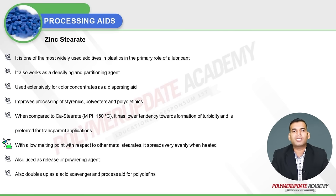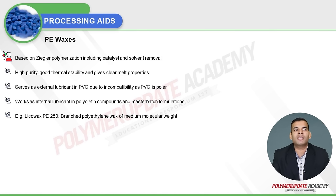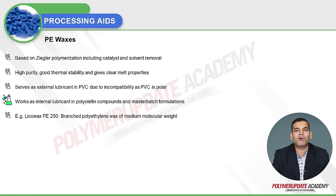With a low melting point relative to other metal stearates, calcium stearate spreads very evenly when heated. It is used as a release or powdering agent, and also doubles up as an acid scavenger and process aid for polyolefins. Polypropylene waxes are low molecular weight polyolefins based on metallocene catalysts, perfectly suitable as sole carriers for pigments and additive masterbatches, allowing higher loadings with extremely low FPV (filter pressure values) without negative impact on physical and mechanical properties. Polyethylene waxes are based on Ziegler polymerization and provide high purity, good thermal stability, and clear melt properties.